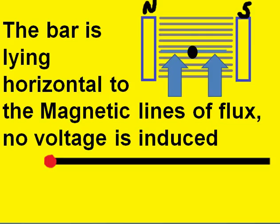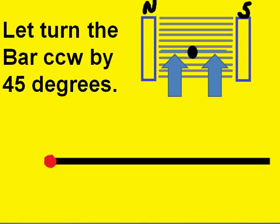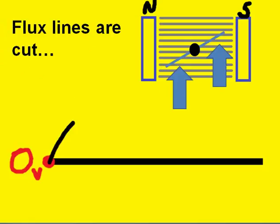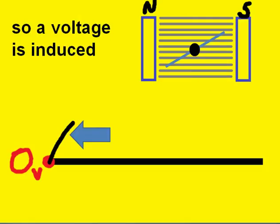The bar is lying horizontal to the magnetic lines of flux, so no voltage is induced. So let's turn the bar counterclockwise by 45 degrees. Now flux lines are cut, so a voltage is induced.